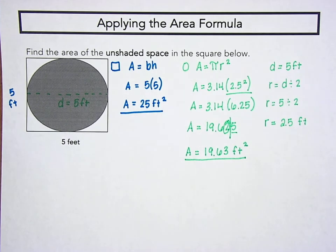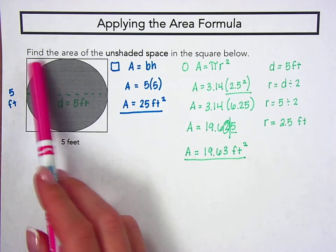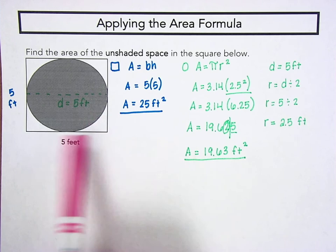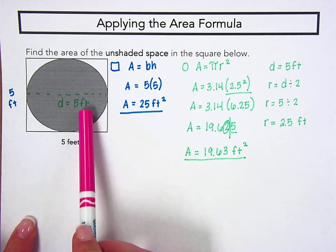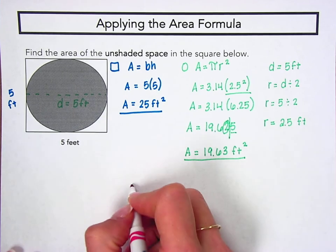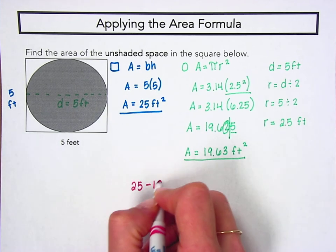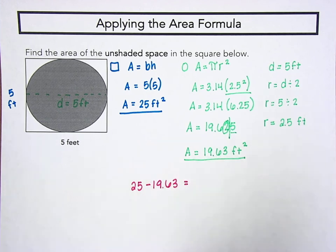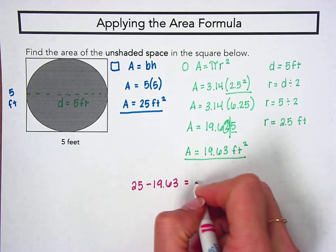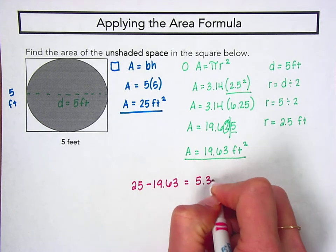Now I know the area of both my square and my circle, and because we know that the area of the unshaded regions is really the area of the square without the area of the circle, we can now subtract 25 minus 19.63 to find the area of our unshaded region. And we get 5.37.